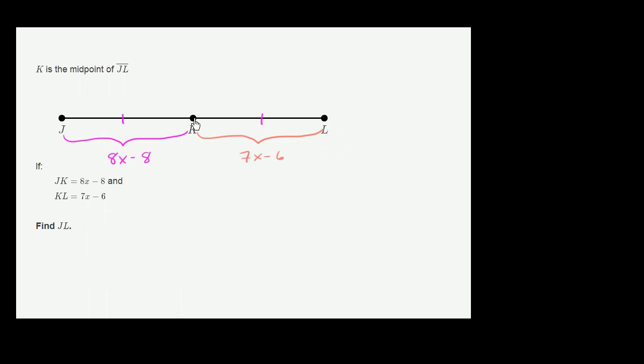Because K is the midpoint, we know that this length must be equal to this length. So to find JL, we just need to find the whole length. We need to find what x is. If we know what x is, then we're going to know what this length is and what this length is. And we could either double one of them or add them together to find the length of the entire segment.